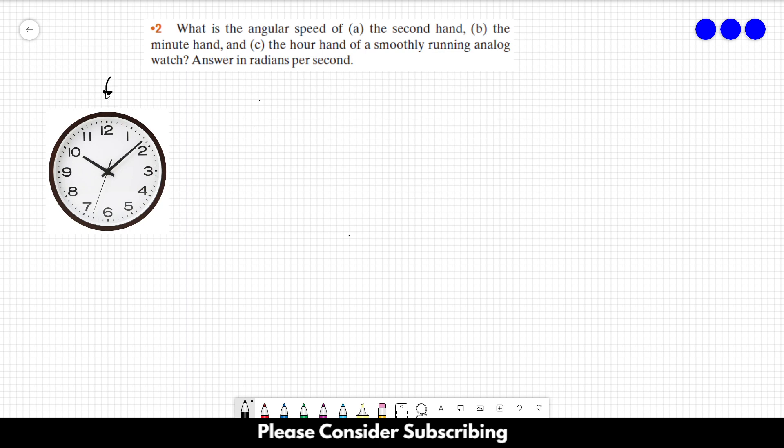You have three different hands. This one is the second hand, this one is the minute hand, and this one is the hour hand. We want to know their angular speed.